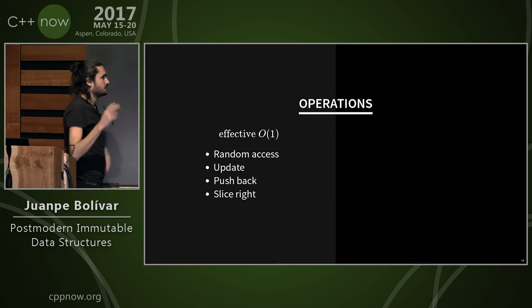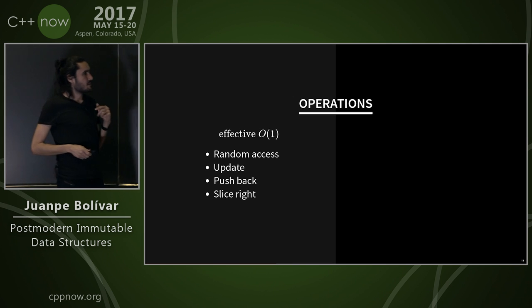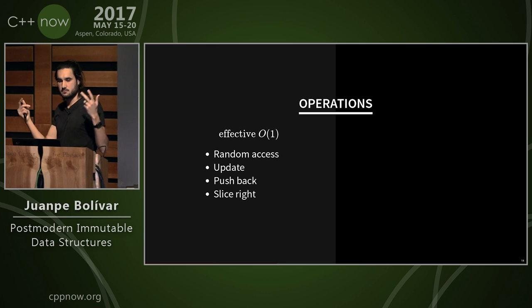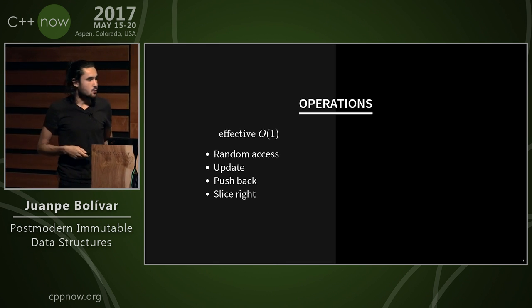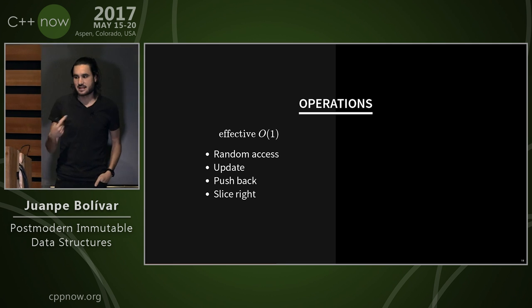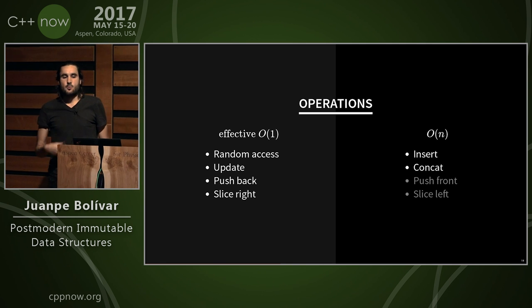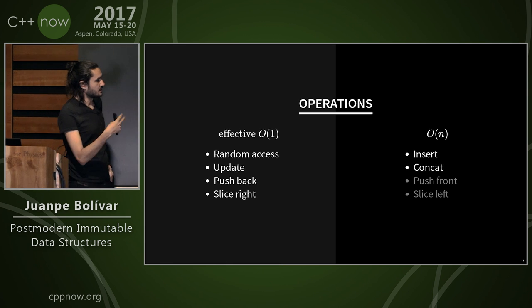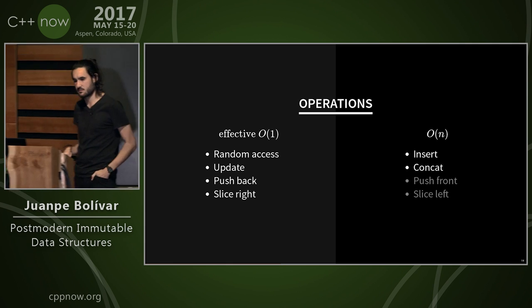Algorithmically, the operations of this immutable vector are similar to a normal mutable vector with higher constants. We have effective O(1) random access, update, push_back, and slice right. We also have O(1) insertion, concatenation, push_front, and slice left with a cheap solution to make them effective O(1).